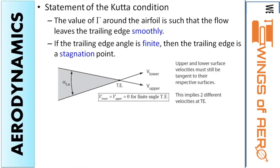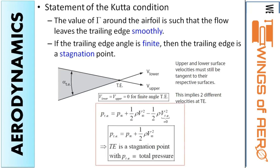The second condition: if the trailing edge angle is finite, then the trailing edge is a stagnation point. As you can see in the figure displayed on your screen, it has a finite angle with velocities V-lower and V-upper. Both velocities will coincide and equal zero for a finite angle at the trailing edge. Applying Bernoulli's equation, you can find that the pressure at the trailing edge is equivalent to the total pressure — that is, the trailing edge is a stagnation point.